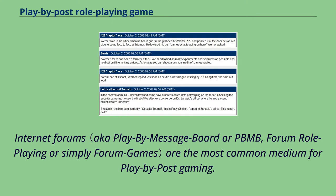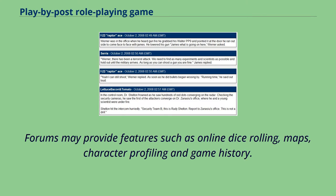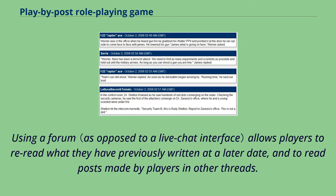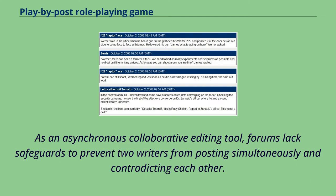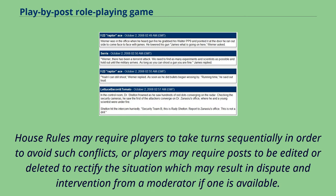Internet forums are the most common medium for play-by-post gaming. Forums may provide features such as online dice rolling, maps, character profiling, and game history. Using a forum allows players to re-read what they have previously written at a later date, and to read posts made by players in other threads. Many online services provide free game hosting specifically for game masters, or provide general forum services that can be used for role-playing purposes. As an asynchronous collaborative editing tool, forums lack safeguards to prevent two writers from posting simultaneously and contradicting each other. House rules may require players to take turns sequentially in order to avoid such conflicts, or players may require posts to be edited or deleted to rectify the situation, which may result in dispute and intervention from a moderator if one is available.